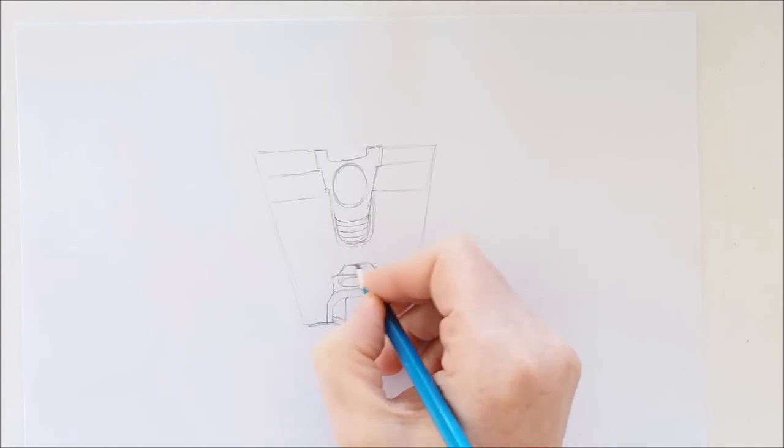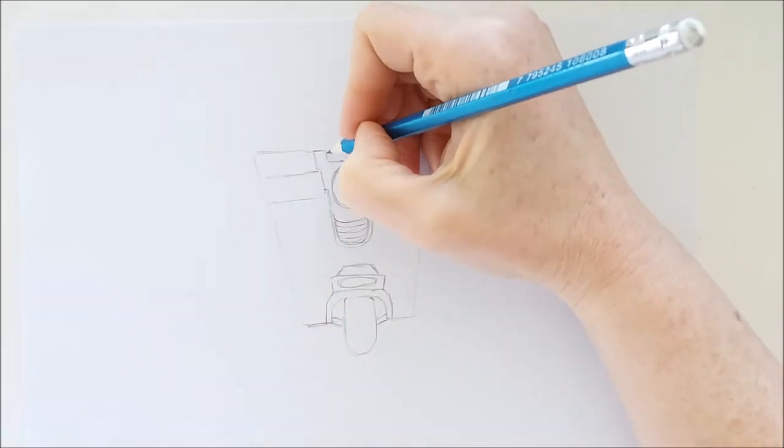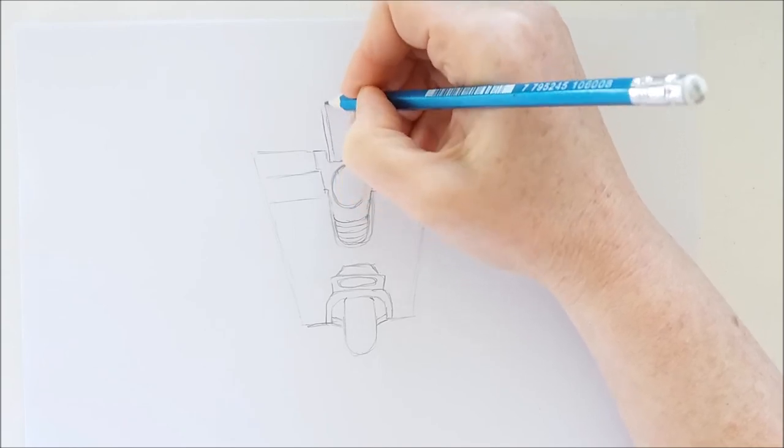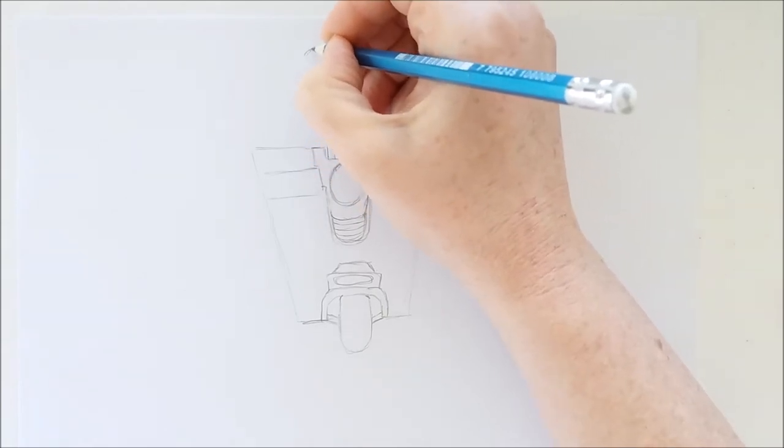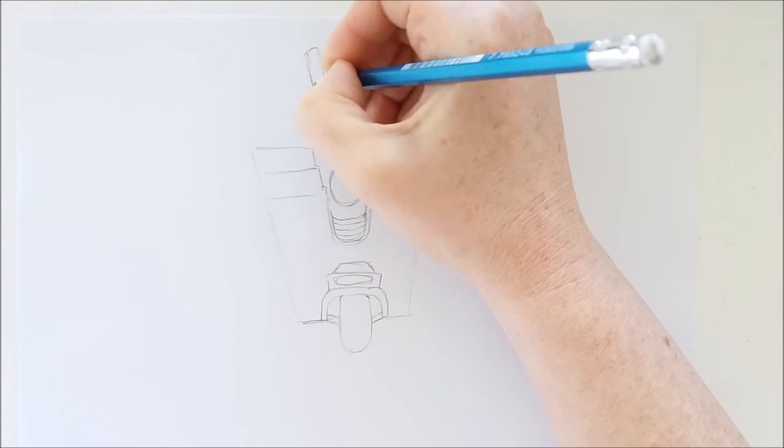Then on top of this, I'm just drawing another little shape for the details of Claptrap. Now here we'll draw two lines upward. This is the antenna or the microphone, and we'll go ahead and add an oval shape on top of those two lines.